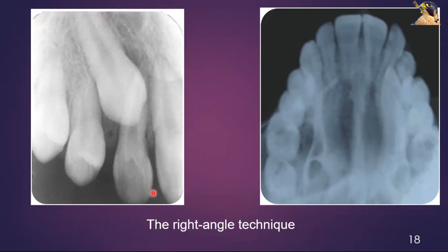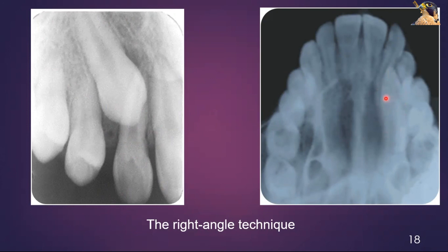This is the right angle rule: two radiographs are taken at right angles to each other. The occlusal image is taken at a right angle to the periapical one. This rule indicates the position — whether the infected maxillary canine is present on the palatal side or on the buccal side.